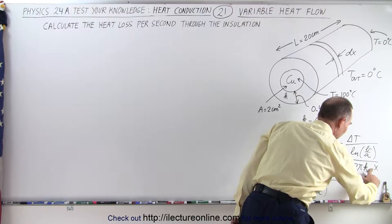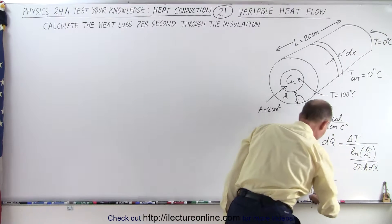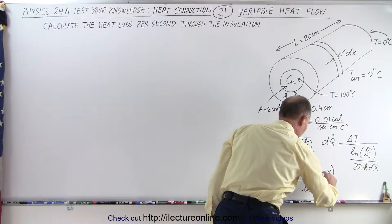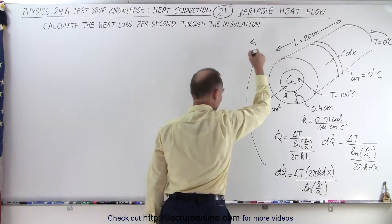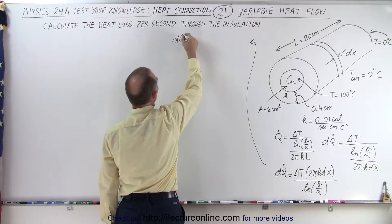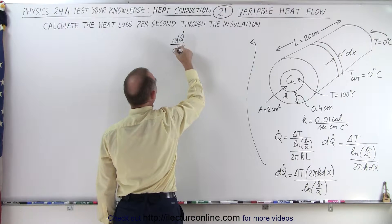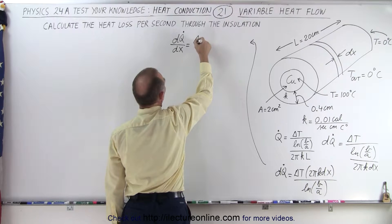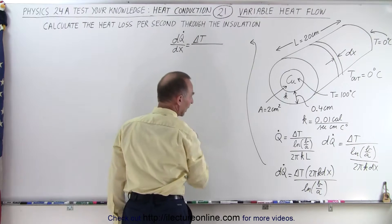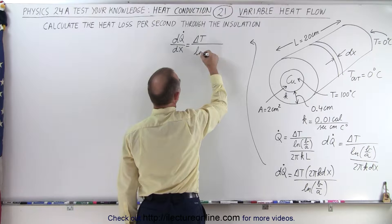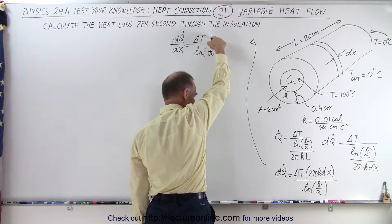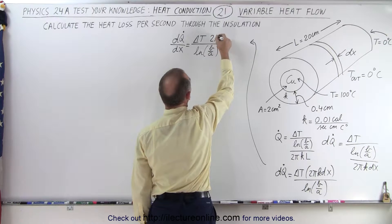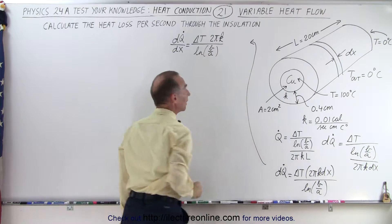We want a dx because we will talk about differentials. And so finally, what we can do is we can write this as dQ̇/dx is equal to ΔT divided by the natural log of B over A, and then we have this times 2πK.